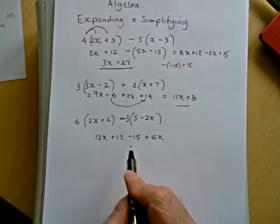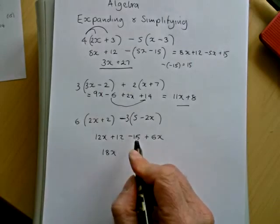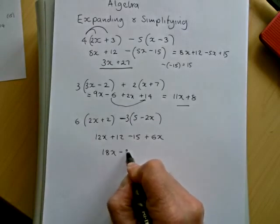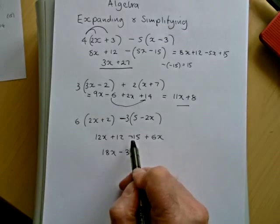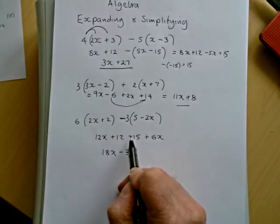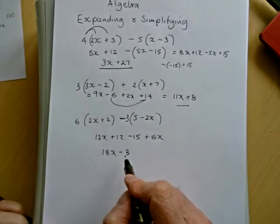So let's collect the like terms. So we have 12x and 6x, which is 18x. And we have 12 take away 15, which would be minus 3. The difference between 12 and 15 is 3, and the reason it's negative 3 is the negative is on a larger number. So that's expanding and simplifying brackets.